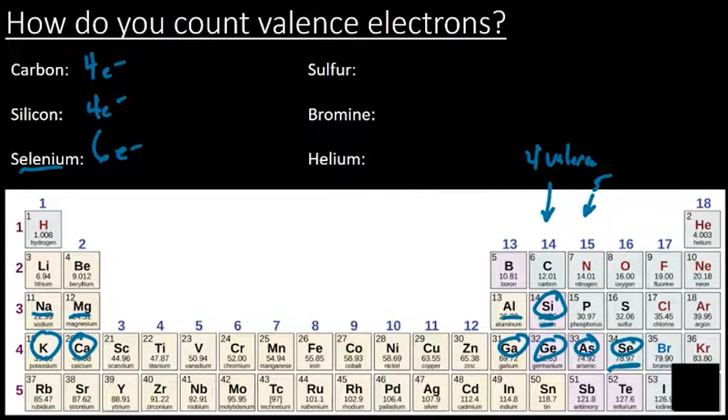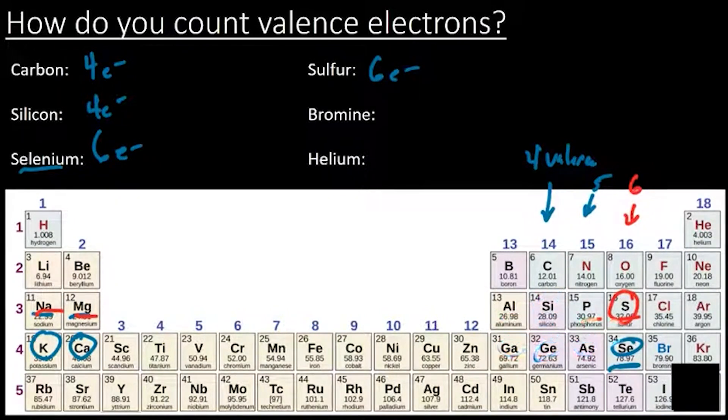And now we get to sulfur. Notice where sulfur's at. Sulfur's right here. It's in the same column as selenium. So what do we expect it to have? Well, also 6. And let's check that. 1, 2, 3, 4, 5, 6. Oh, it does have 6. So those columns are very helpful. They can actually have you really quickly predict the number of valence electrons.